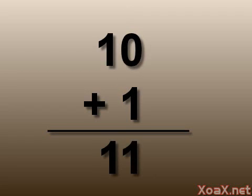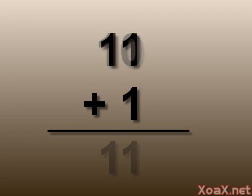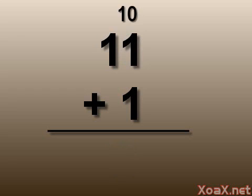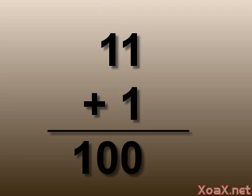Adding 1 to this we get 1 1. Adding 1 again, we carry to the twos place. Now we have 2, or 1 0, in the twos place, so this carries to the fours place to give us 1 0 0, or 4.